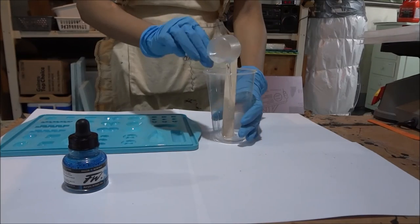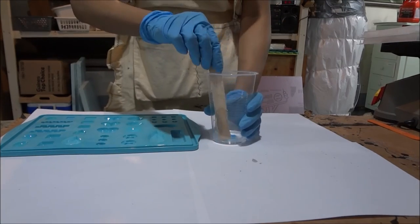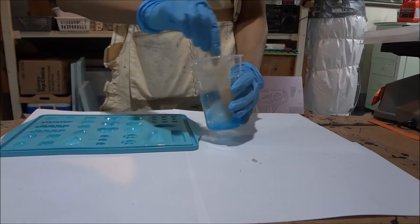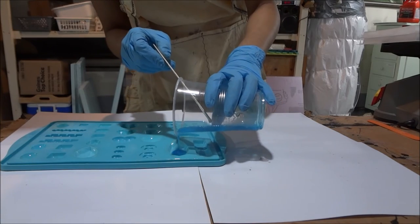Now I add the hardener and mix away. You really want to get a good mixture, or else you can end up with soft, sticky spots in your gems. Pour the mixture in the mold and let it cure.